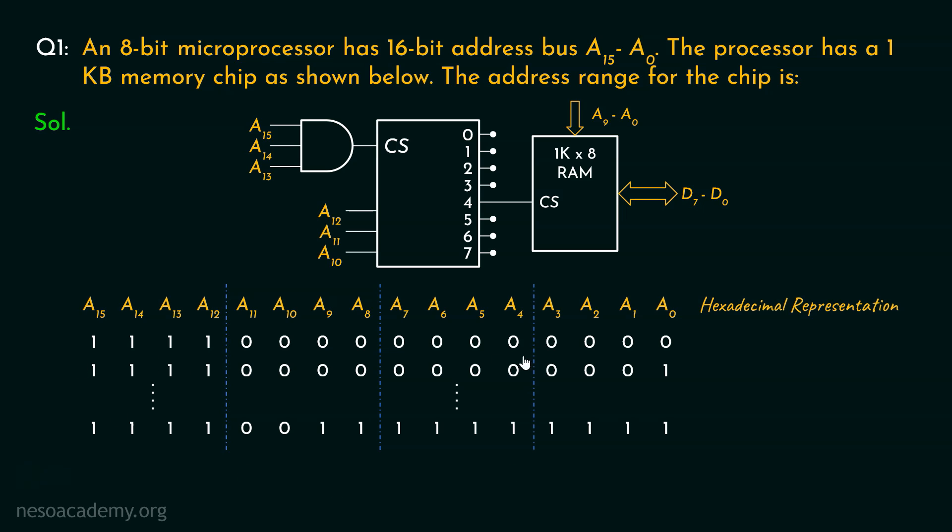So, what will be the first address? Notice, all 1s in here, therefore F, followed by all 0s, all 0s and all 0s. So, triple 0 in hexadecimal. What about the second address? It's same for the first 4 bits. It is going to be F, followed by 2 more 0s because these are all 0s. Finally, for the last nibble, if you notice, 0, 0, 0, 1, that is 1 in hexadecimal.